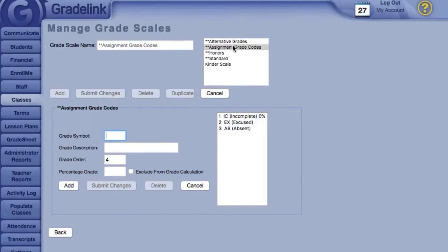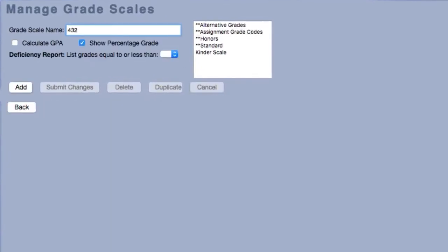Gradelink also allows administrators to build their own custom Gradescales. To get started, add a Gradescale name and click Add.